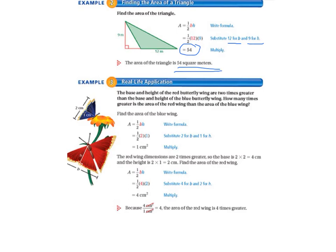Example 3 is a real-life application. The base and height of the red butterfly wing are 2 times greater than the base and height of the blue butterfly wing. How many times greater is the area of the red wing than the area of the blue wing? We find the area of the blue wing using our formula. Substituting 2 for B and 1 for H, so 2 times 1, and one-half of that equals 1 centimeter squared.